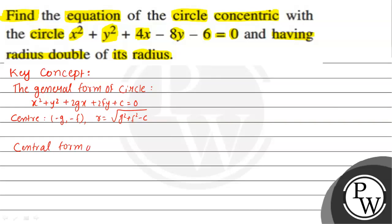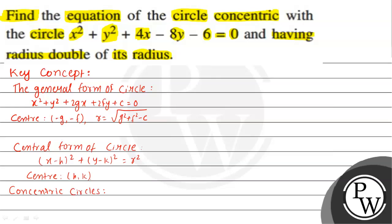The central form of a circle is given by (x - h)² + (y - k)² = r², where the center is (h, k) and the radius is r. A concentric circle is a circle which has the same center but a different radius.